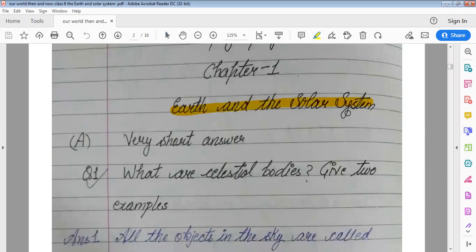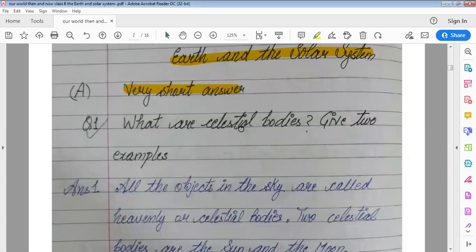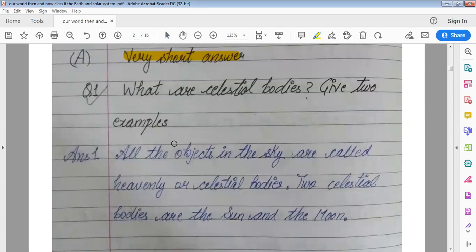Earth and the solar system. Very short answers. What are celestial bodies? Give two examples. All the objects in the sky are called heavenly or celestial bodies. Two celestial bodies are the sun and the moon.